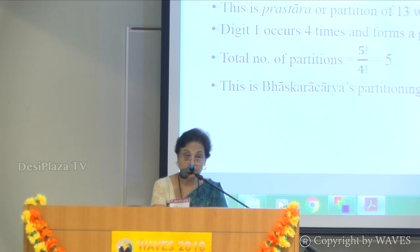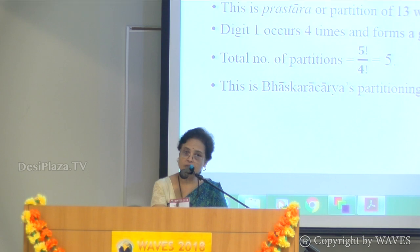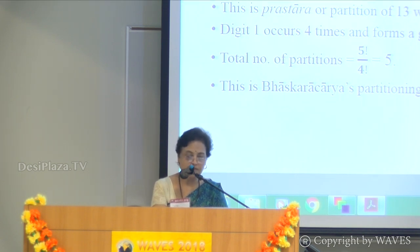When only 2 digits 1 and 9 are used: digit 1 occurs 4 times and forms a group; digit 9 occurs only once. So the total number of permutations or partitions are 5! / 4! = 5. This is Bhaskaracharya's partitioning.